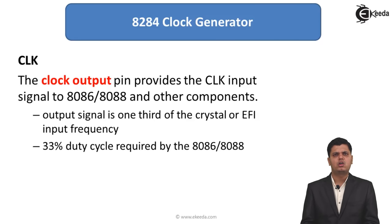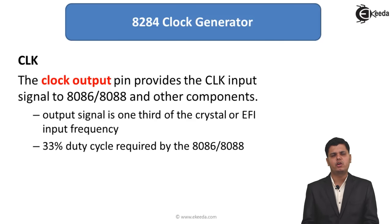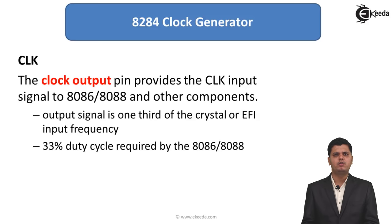The next pin is CLK, the clock output. It provides the clock input to the 8086 microprocessor, which is connected to this important pin. By taking input from the crystal or external clock input, it generates the clock frequency required by the 8086 microprocessor. It is an output signal at one third of the crystal or EFI input frequency, providing a 33 percent duty cycle as required by the 8086.